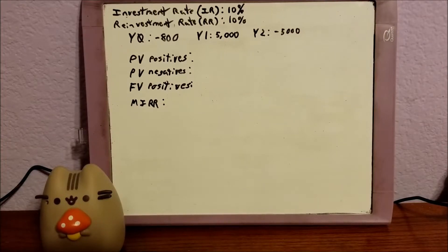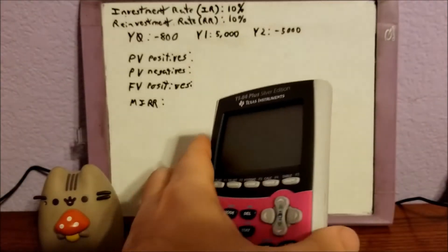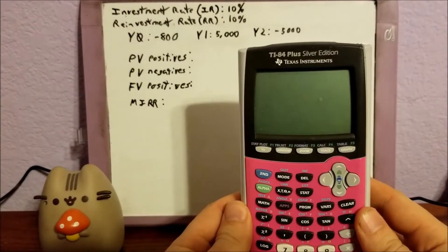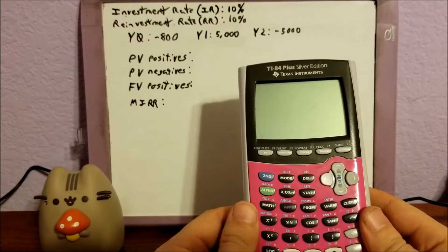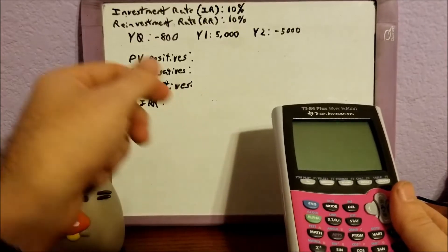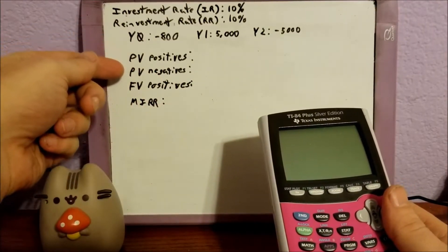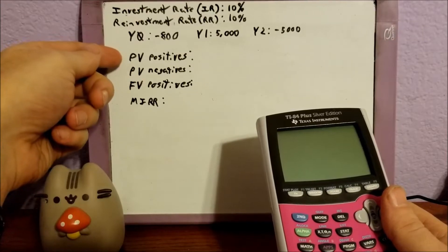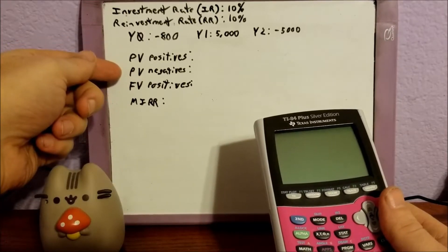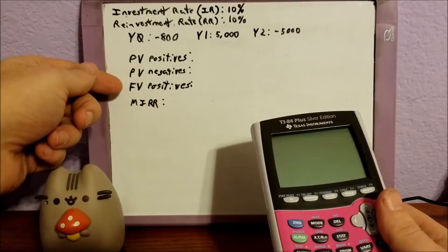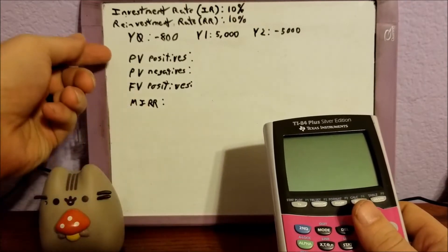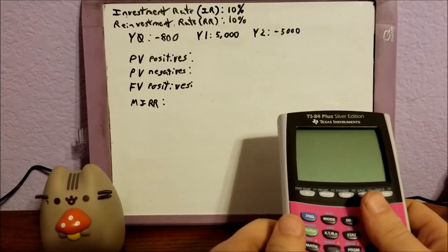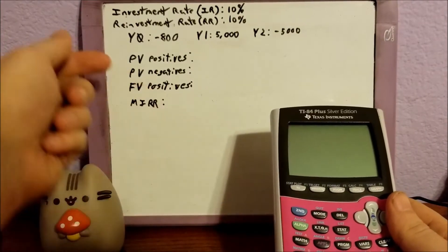Now I'm going to show you a method that works no matter what — whether the signs are all the same or they change, whether they're all positive or negative. There will be a few more steps involved, but it's still pretty easy. I'm going to use the TI-84 Plus Silver Edition; as long as it's a TI-84 it's going to work, and I believe it also works with the TI-83. First, we're going to need a couple of inputs: the present value of the positives, the present value of the negatives, and the future value of the positives.